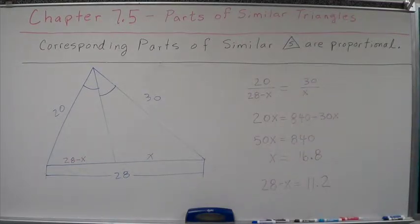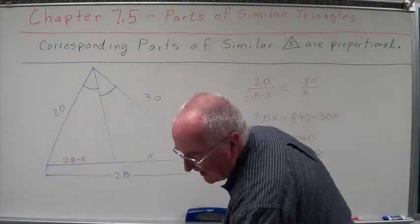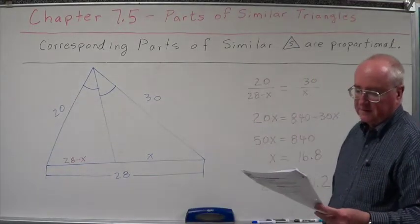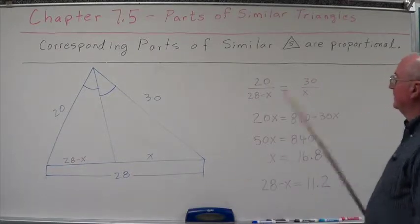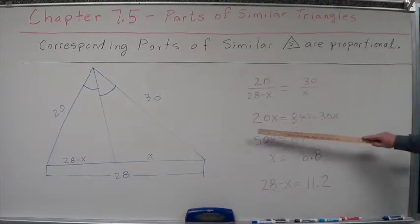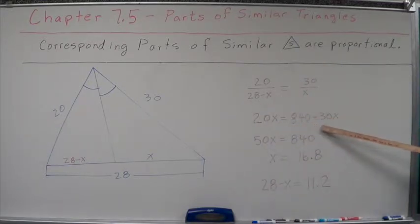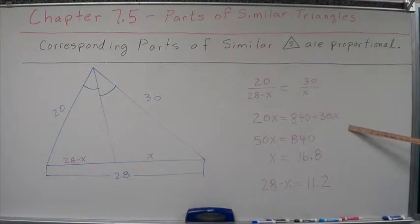So let's set up our proportion in accordance with that. 20 is to 28 minus x as 30 is to x. You got that? It's 30 is to x. Let's do a cross multiplication. 20 times x is 20x. 30 times 28 is 840 minus 30x.